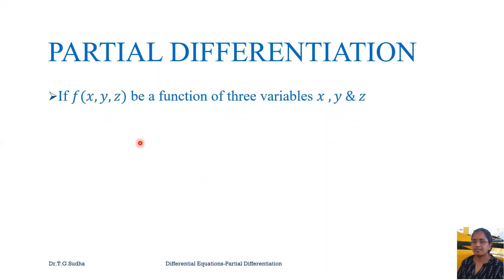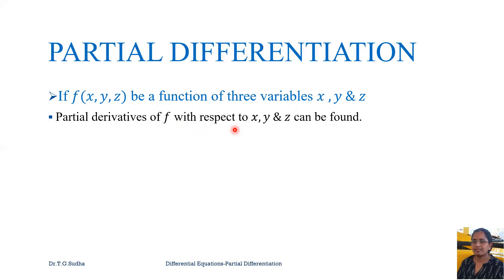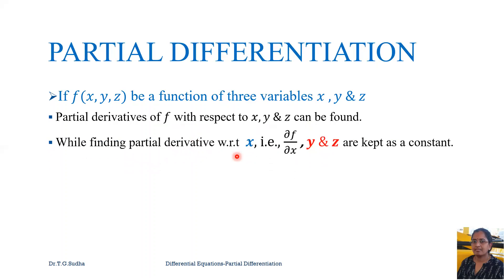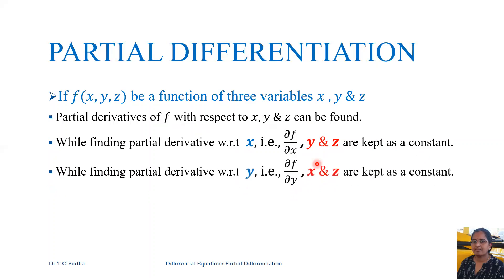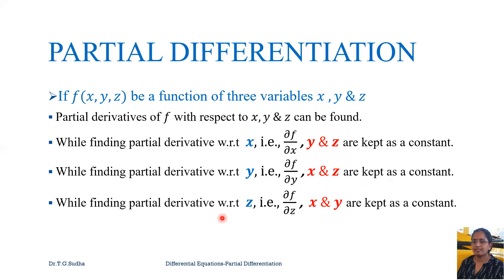Now let us look at the rules for when a function f has three variables x, y, z. Partial derivatives of f with respect to x, y, and z can be found. While finding ∂f/∂x, both y and z are kept as constant. While finding ∂f/∂y, x and z are kept as constant. Similarly, while finding ∂f/∂z, both x and y are kept as constant.